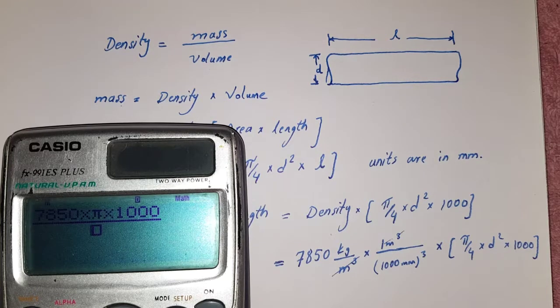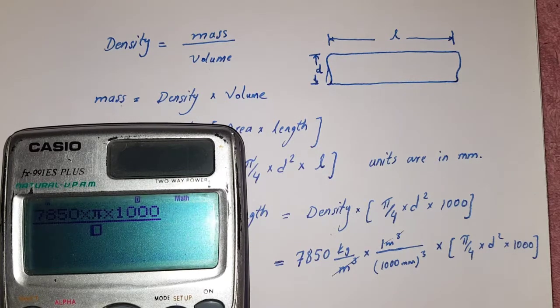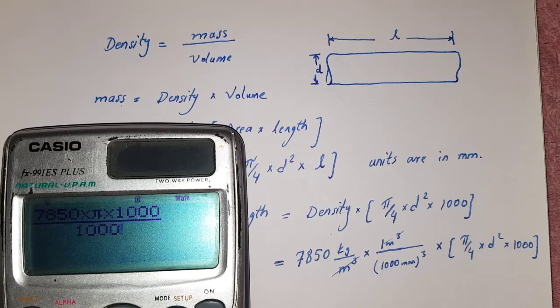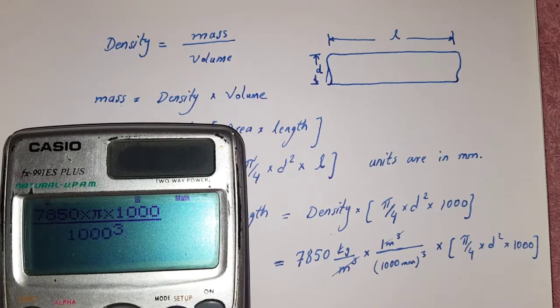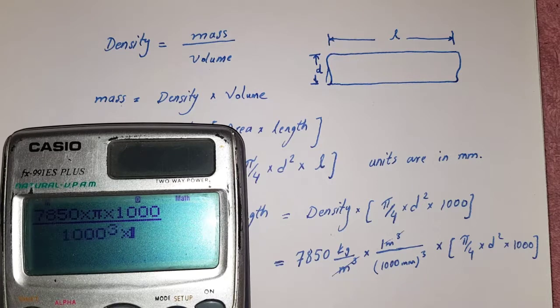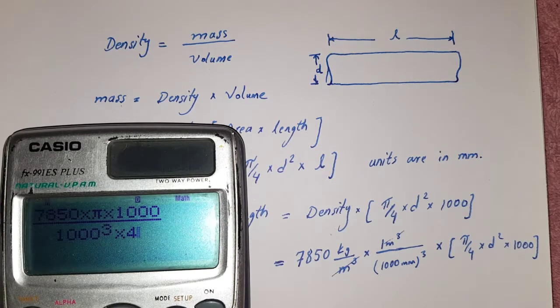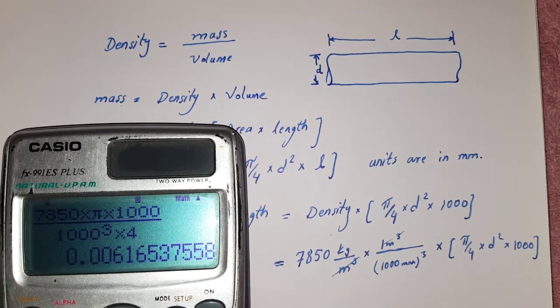It becomes 0.006165 approximately into d square. The unit of this is kg per millimeter square.